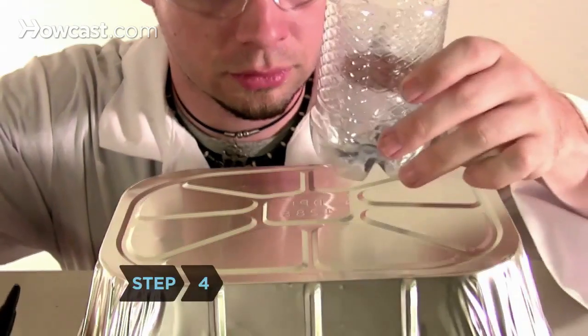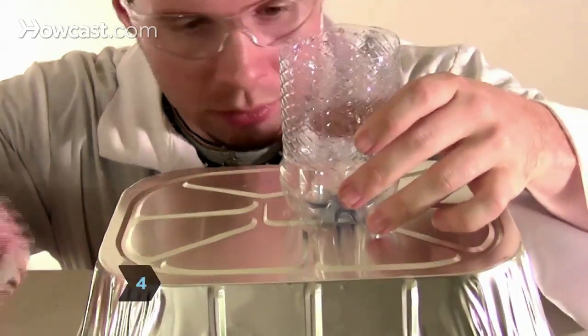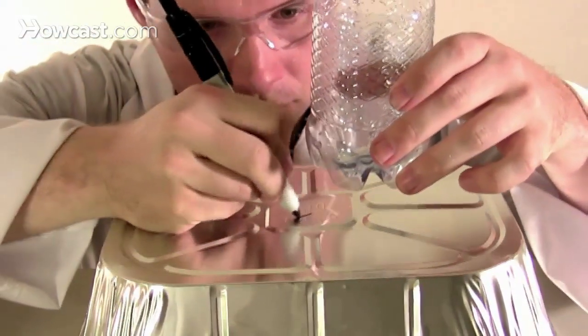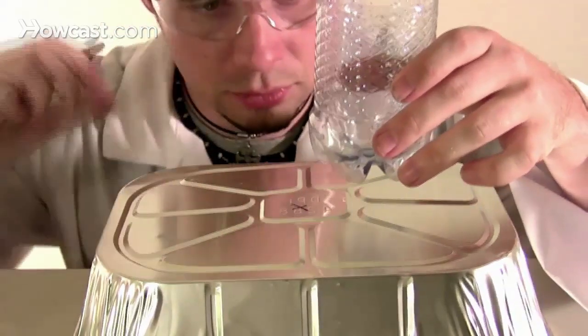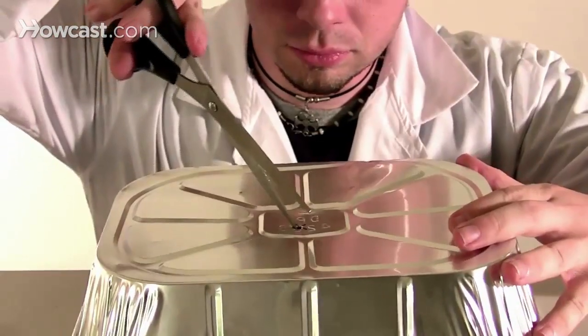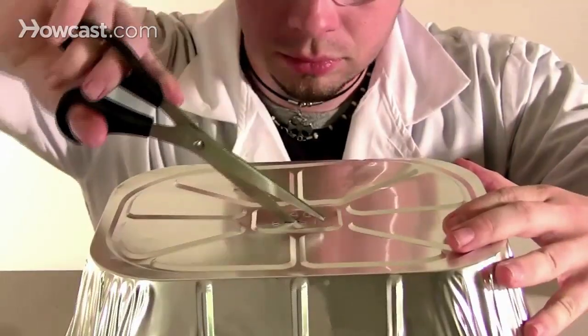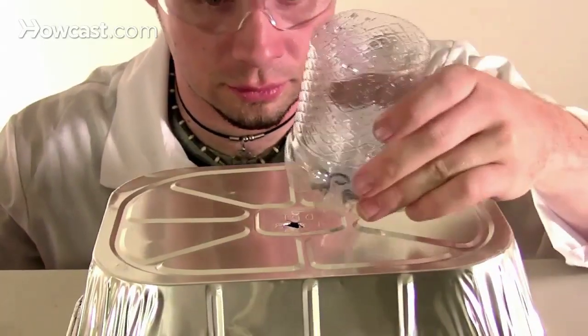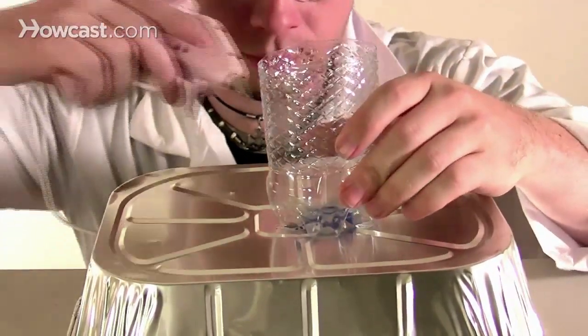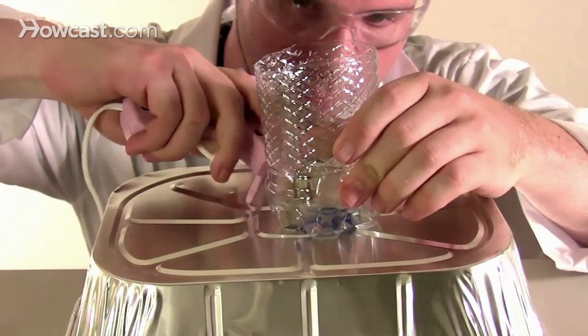Step 4: Turn the second aluminum pan upside down and place the plastic bottle in the center. Use the marker to mark where the needle holes fall on the aluminum, then cut a 1/4-inch hole in the aluminum at each mark. Reposition the bottle so that the holes in the bottle and the aluminum line up. Hot glue the bottle into place.